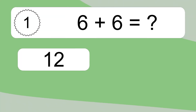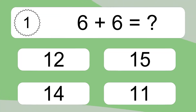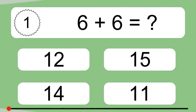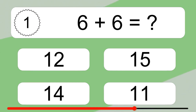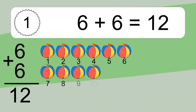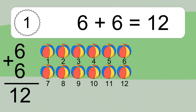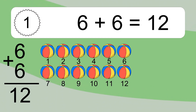Six plus six equals what? Six plus six equals twelve. Let's count it: one, two, three, four, five, six, seven, eight, nine, ten, eleven, twelve.